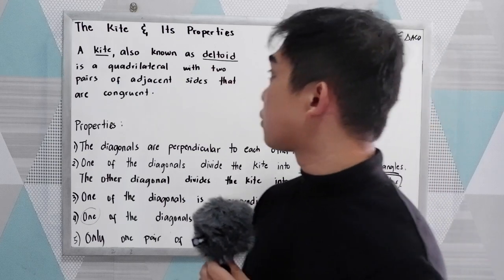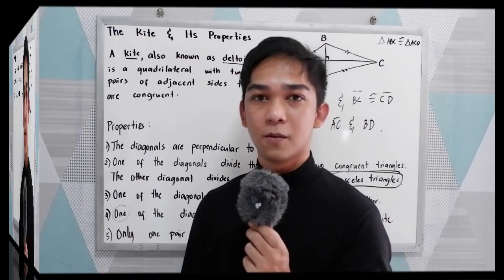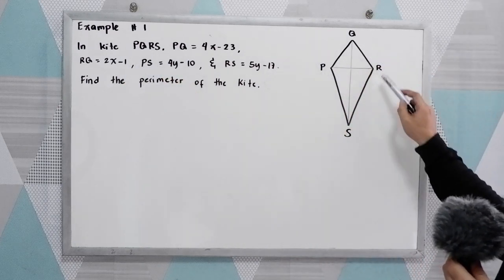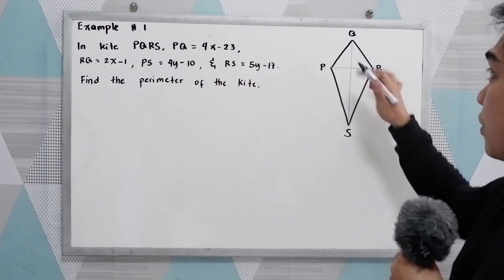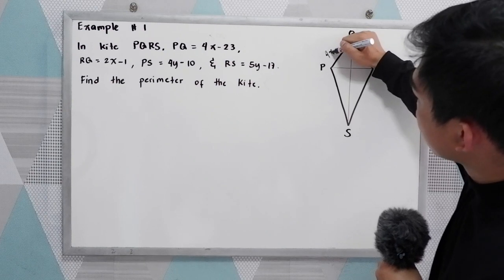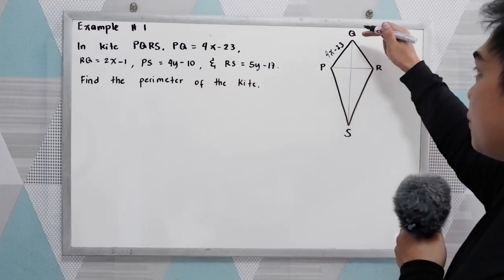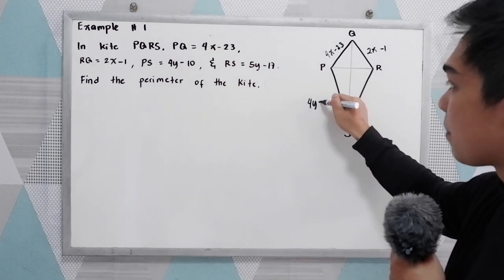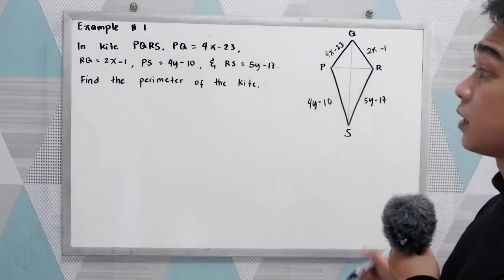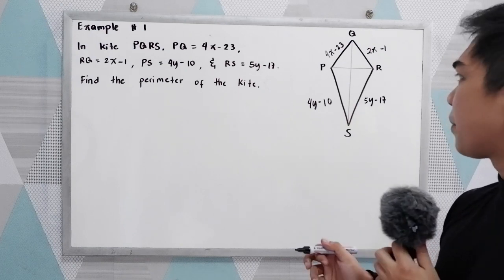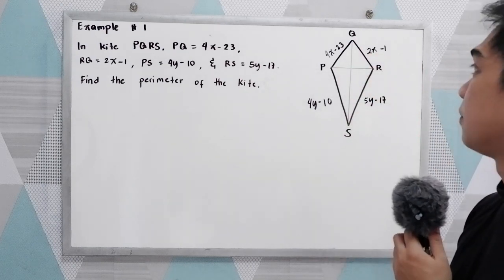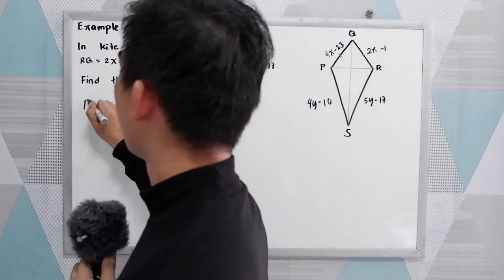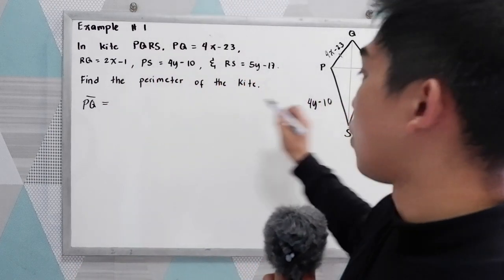To further understand the kite and its properties, let's have some exercises and examples. In kite PQRS, PQ equals 4x minus 23, RQ equals 2x minus 1, PS equals 4y minus 10, and RS equals 5y minus 17. Find the perimeter of the kite. To find the perimeter, let us first find the length of each side. By the properties of a kite, PQ is congruent to QR.